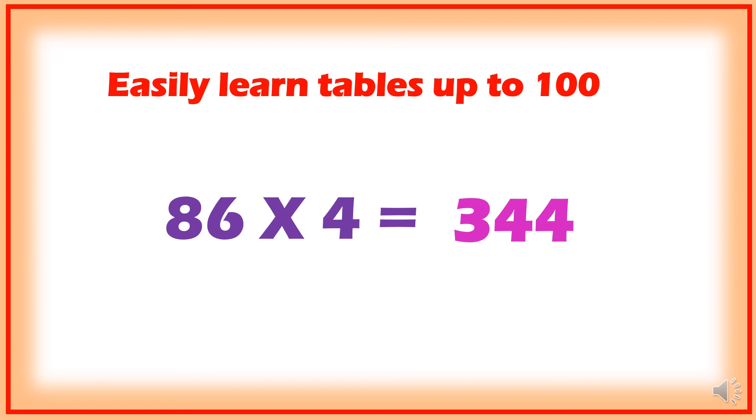You can also easily get this type of sums - that is below 100, that is 2-digit numbers multiplied by single-digit numbers - without any calculations or without any pen or paper. You can get it, but you must learn 1 to 9 tables perfectly.